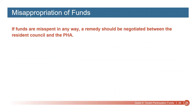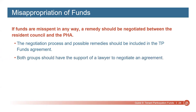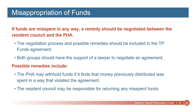If funds are misspent in any way, a remedy should be negotiated between the resident council and the PHA. The negotiation process and possible remedies should be included in the tenant participation funds agreement. Both groups should have the support of a lawyer to negotiate an agreement. Possible remedies include the PHA withholding funds if it finds that money previously distributed was spent in a way that violated the agreement, or the resident council taking responsibility for returning any misspent funds.